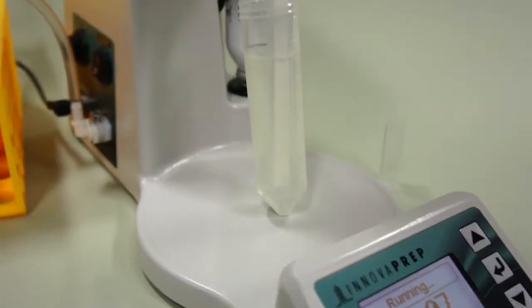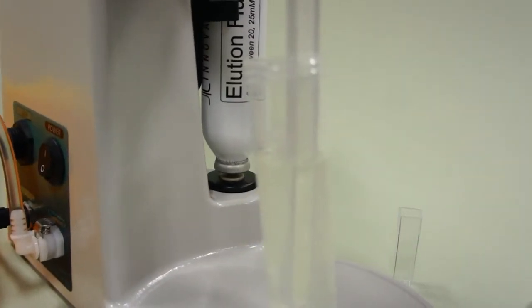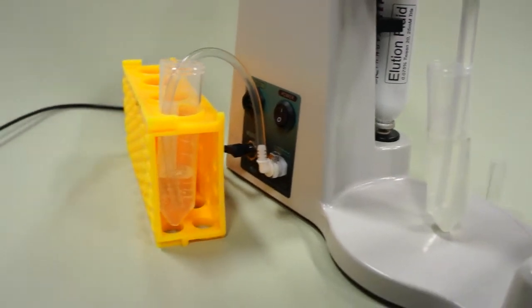The dilute sample is immediately drawn into the concentration cell. The solid particles are captured on the surface of the filter, while the liquid is pumped through to the permeate.